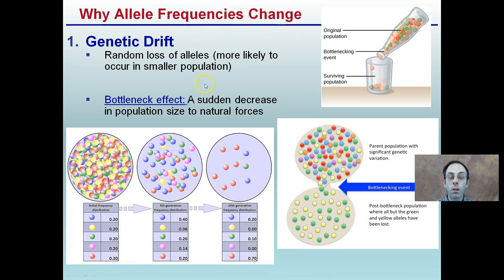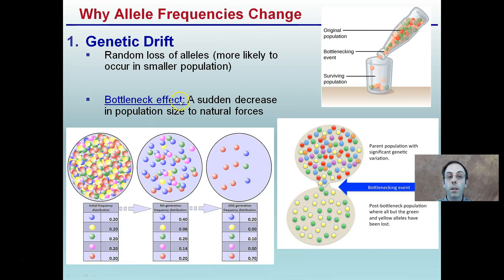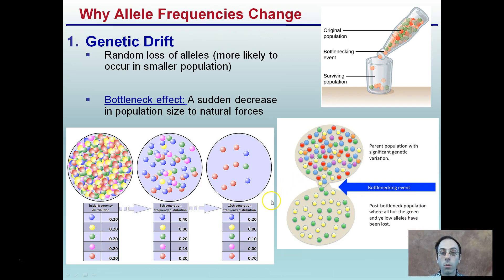The random loss of alleles in smaller populations also applies to what is termed the bottleneck effect. Under genetic drift we have the founder effect — a small group establishing in a new location — and the bottleneck effect, which is a sudden decrease in population size due to natural forces. Starting from a parent population with genetic variation, a bottleneck event occurs — it could be disease, famine, or a host of other reasons. It's called a bottleneck because the population passes through a small opening, leaving a surviving population such as just the green and yellow individuals. The term refers to the neck of a bottle where a large population is forced through a narrow passage.